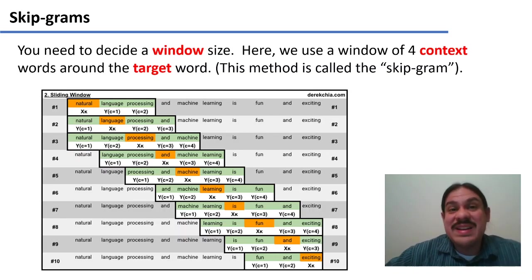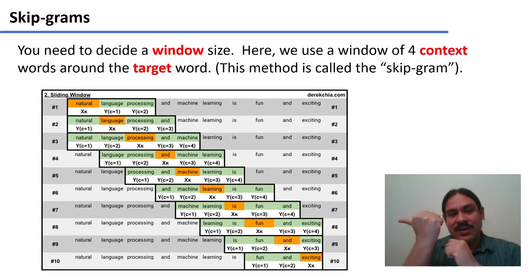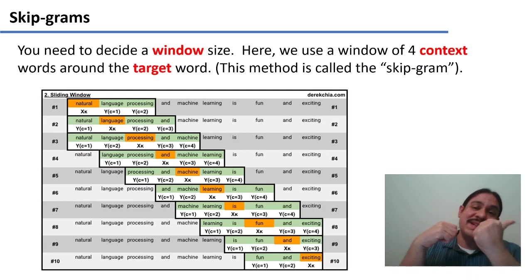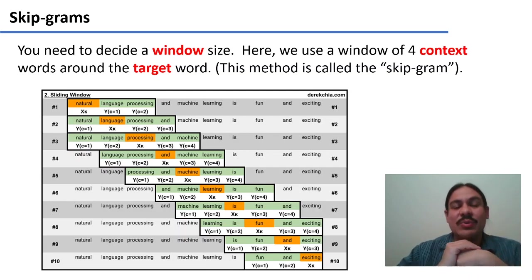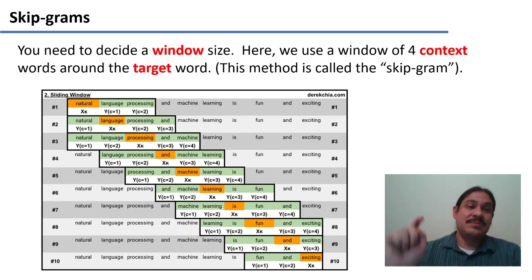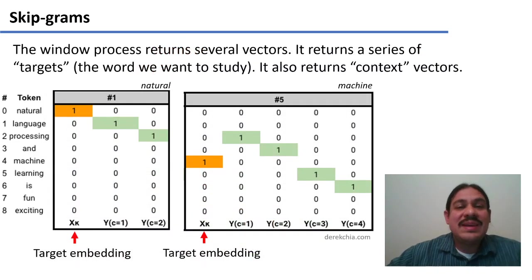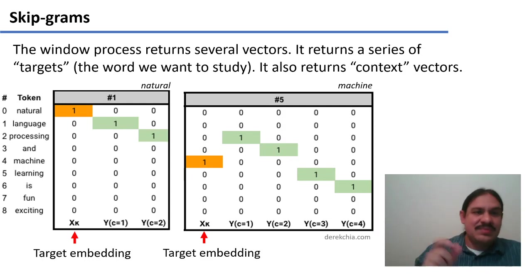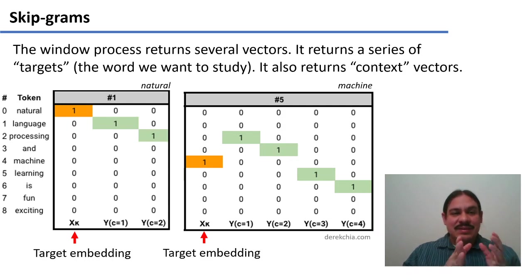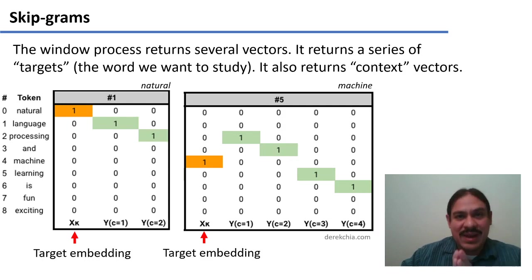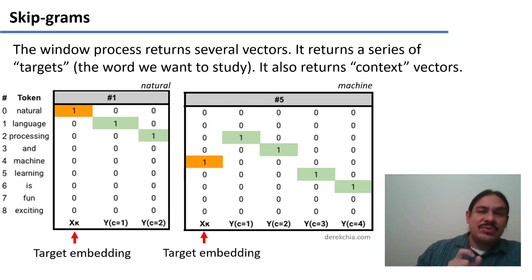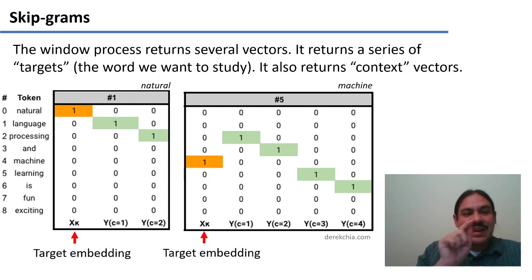Let's look at row number one, the word natural. Natural is surrounded by two words that follow it — language and processing — but by no words that precede it, because there were no previous words in the sentence. So the window just includes language and processing. From here, we can make a series of vectors. On the left, we have a simple vector where the orange columns are called the target embedding. For natural, this vector has the value of one, because we are talking about the word natural, and zero for everything else — language, processing, and so forth.